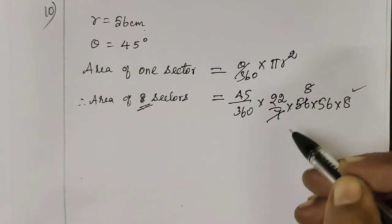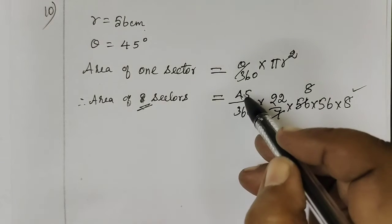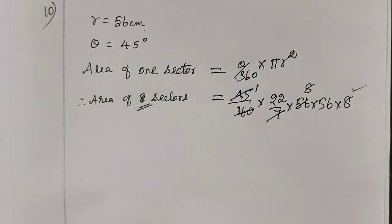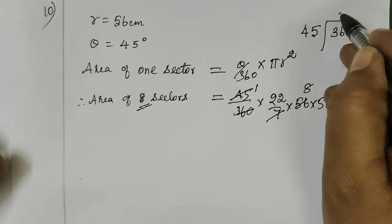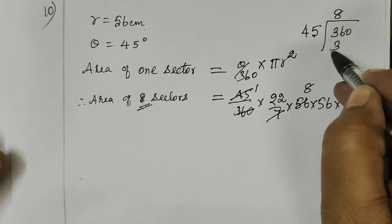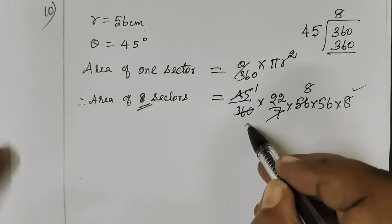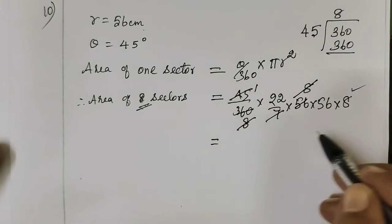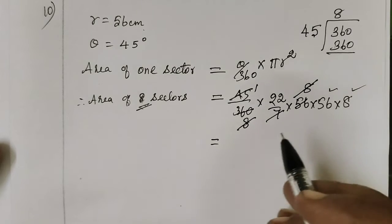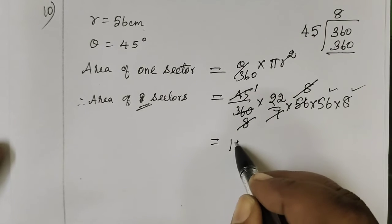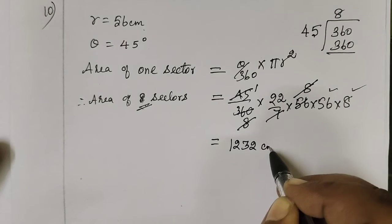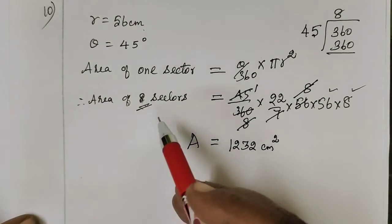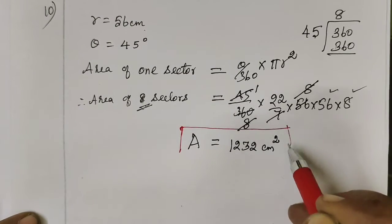Cancel and simplify: 45 over 360 simplifies, 22 over 7 cancels with 56. Then multiplying 56 by 8 gives the result. Therefore, the area of 8 sectors is equal to 1232 cm².